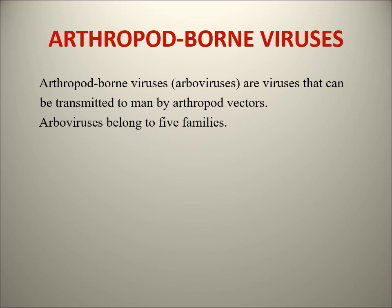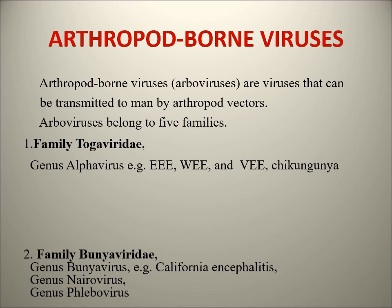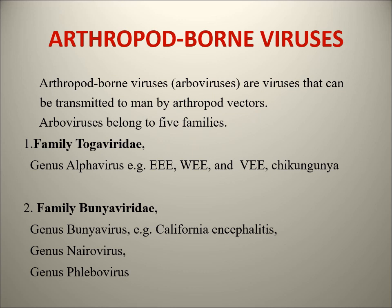The main classification of arboviruses is based on family. Five families are there. First is family Togaviridae, under which genus Alphavirus is there - including Eastern Equine Encephalitis virus, Western Equine Encephalitis virus, and Chikungunya. Then there is family Bunyaviridae, which is more important - with genus Bunyavirus, Nairovirus, and Phlebovirus.